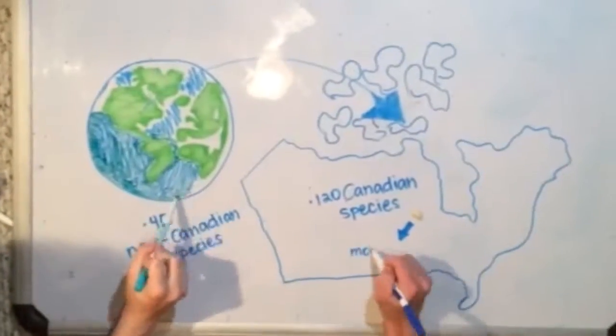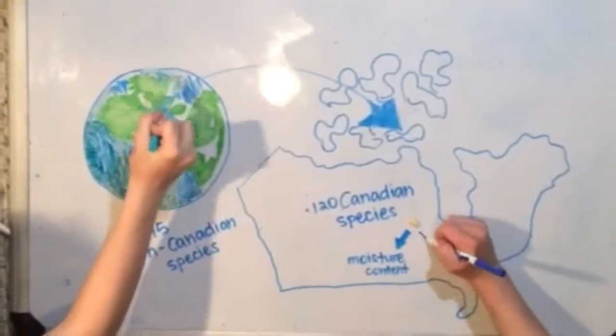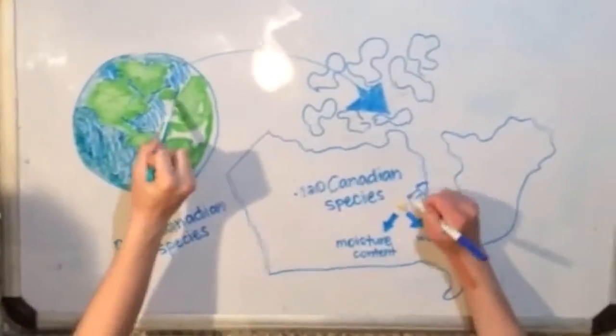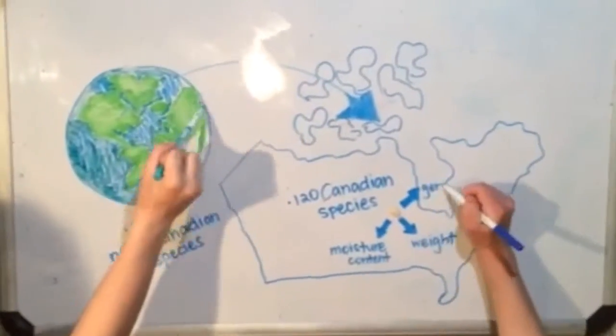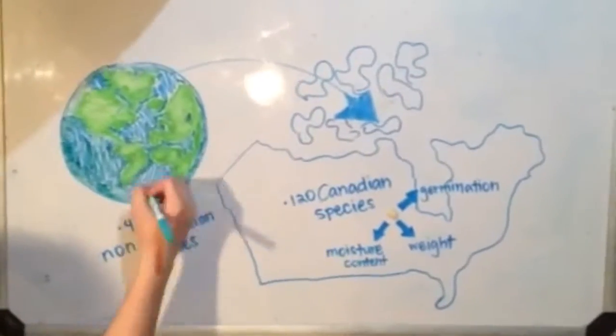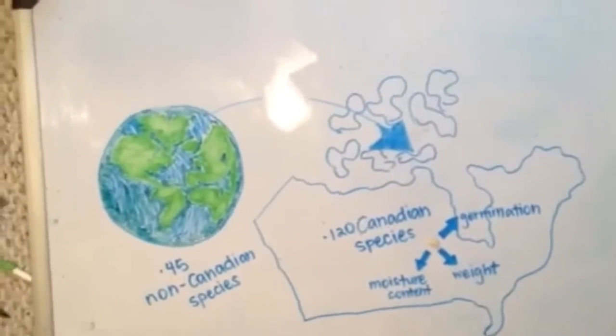The seeds are tested for moisture content, weight, and germination to see if they're worth planting. The goal of NTSC is to preserve the genetic diversity of Canadian tree and shrub species while making them accessible to researchers, the primary users of the bank.